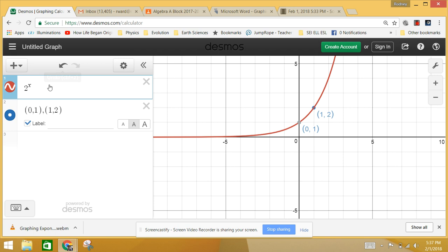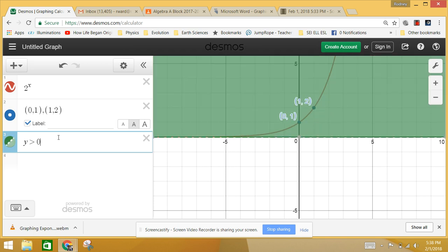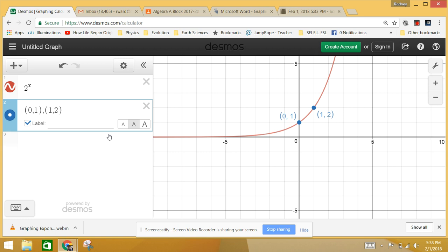So that's our parent function. Our domain is all real numbers, but our range is anything - it can't be negative because 2 to the x will never be negative, and it can't be 0. So our range is y is greater than 0. Everything above here is a possible range value.